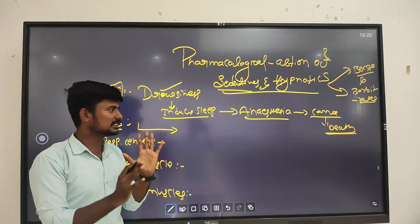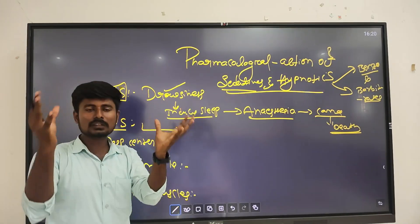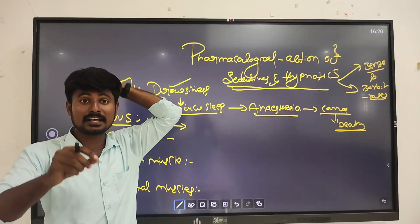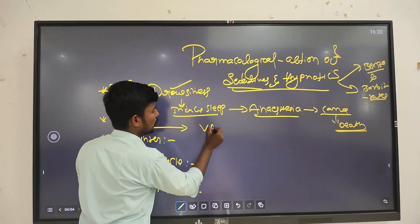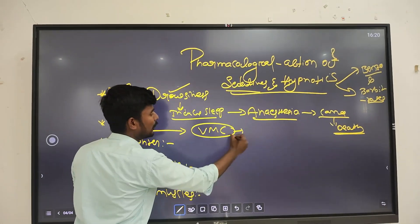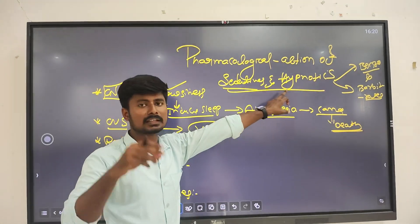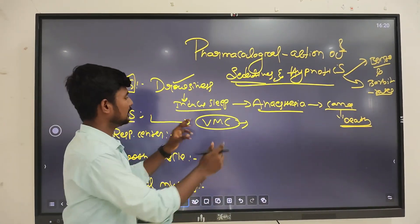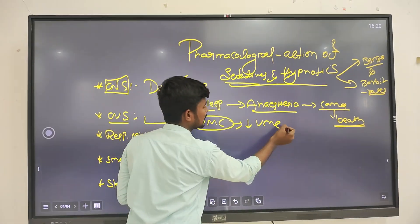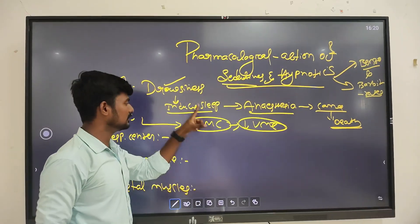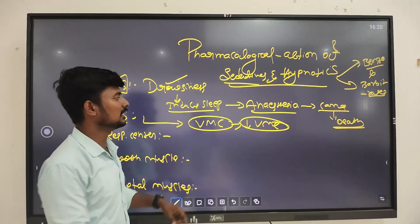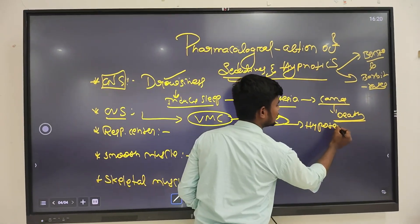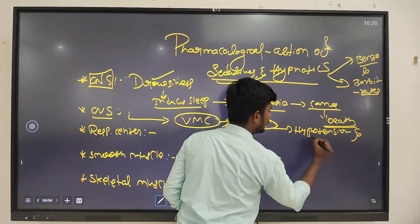Then CVS - cardiovascular system. The vasomotor center controls the overall cardiac functions and is present in our brain. When sedatives and hypnotics are given, they go through the blood-brain barrier and suppress the vasomotor center, leading to hypotension and bradycardia - a decrease in blood pressure and reduction in heart rate.